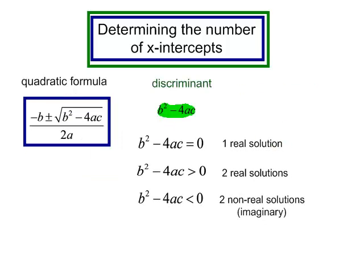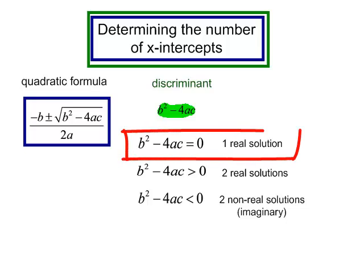If the discriminant is equal to zero, then I will only have one real solution, only one root. When I'm looking for the roots using the quadratic formula, if I have zero underneath this radical, whether I go plus zero or minus zero, it's not going to change. I will only have one root.